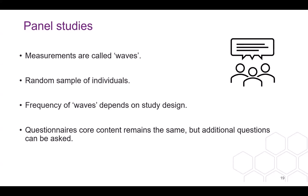Panel studies collect data at different waves, which are different measurement points. The panel members interviewed are people sampled across the whole population of interest to include respondents of all ages. The frequency of the waves depends on the type and design of the study — for example, if you are dealing with an election study, you might want to ask participants questions several times throughout the election year to monitor how their views have changed. The core content of the questions remains unchanged so that you can observe changes in key measurements over time, but it is not uncommon for additional questions to be included in specific waves.